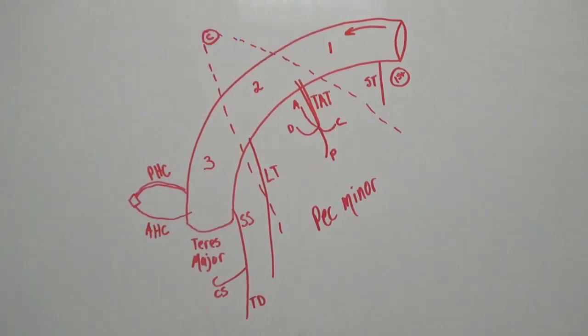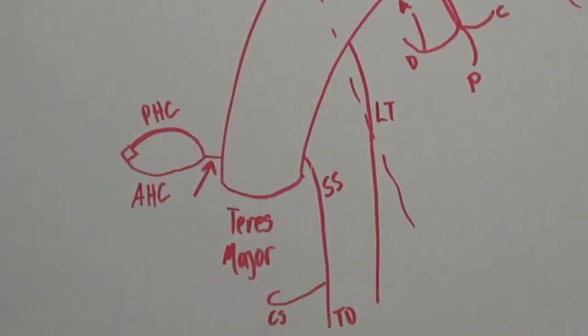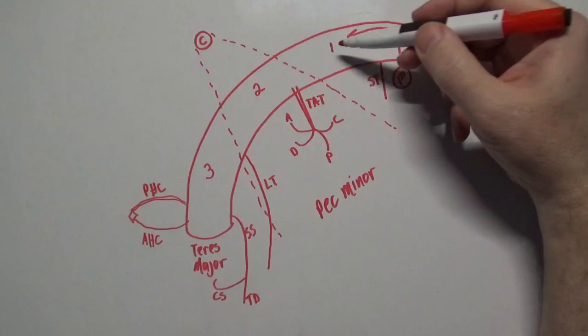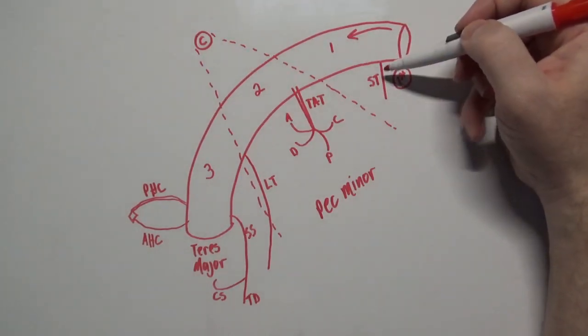It should be noted that sometimes these humeral circumflex arteries will originate from one stalk instead of two separate branches off the axillary artery. It's interesting to note that off the first part, there's one artery that branches off.